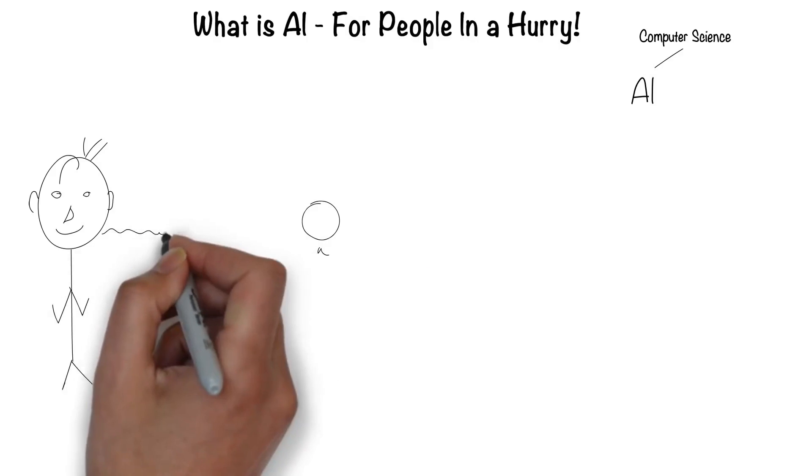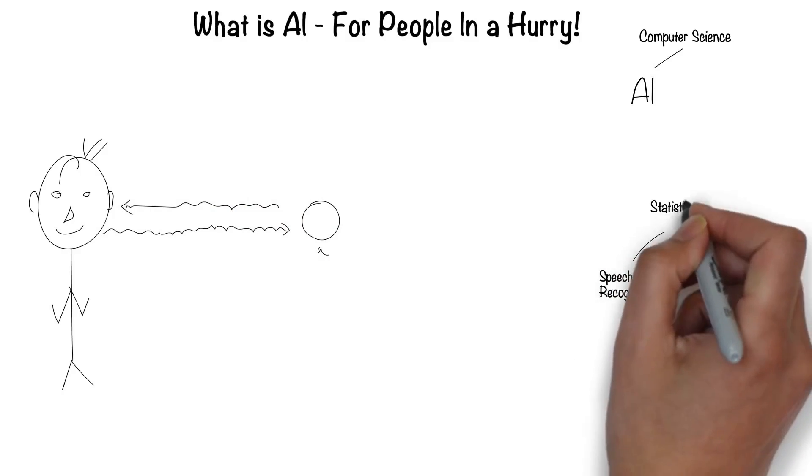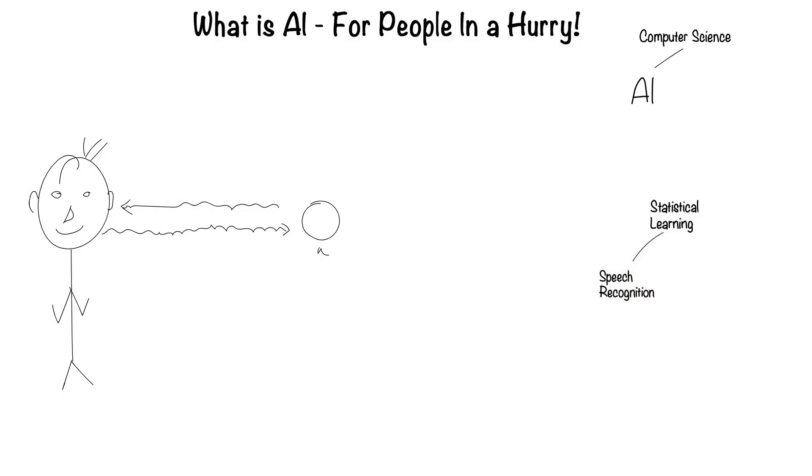Humans can speak and listen to communicate through language. This is the field of speech recognition. Much of speech recognition is statistically based. Hence, it's called statistical learning.